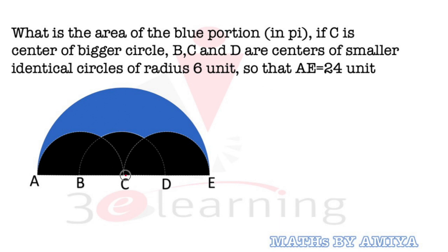Mujhe isko solve karna hota, this one is C in the center, ise join karta. Then C to this point join karta, here join karta. Since C is the center, toh yeh jo aapka radius hai, yeh bhi aapka radius hai, and DC bhi radius hai, so we can say this one is nothing but equilateral triangle.